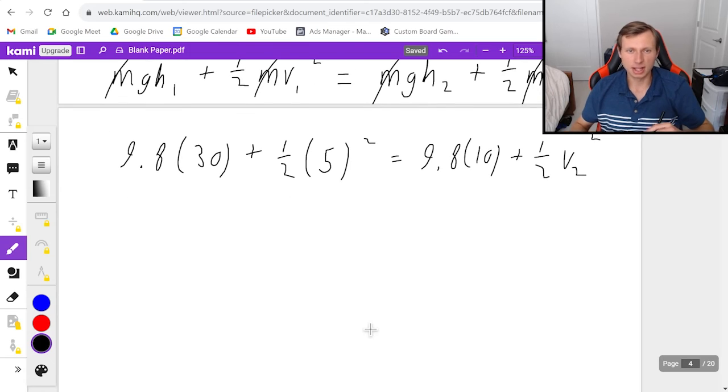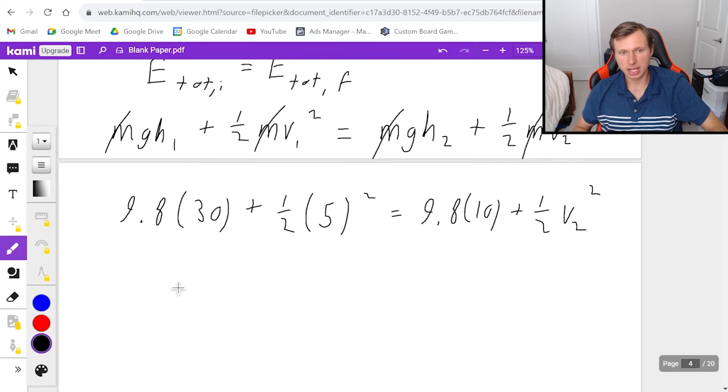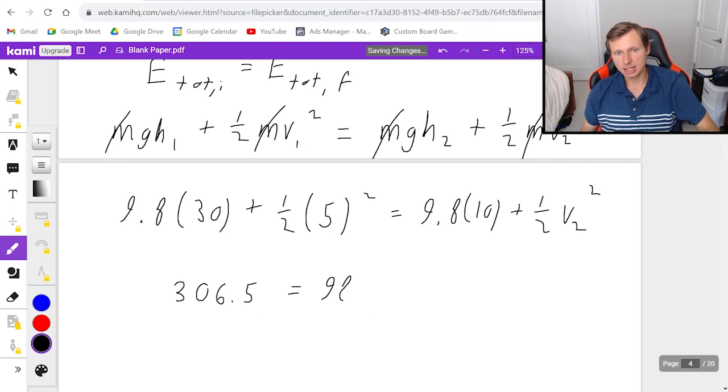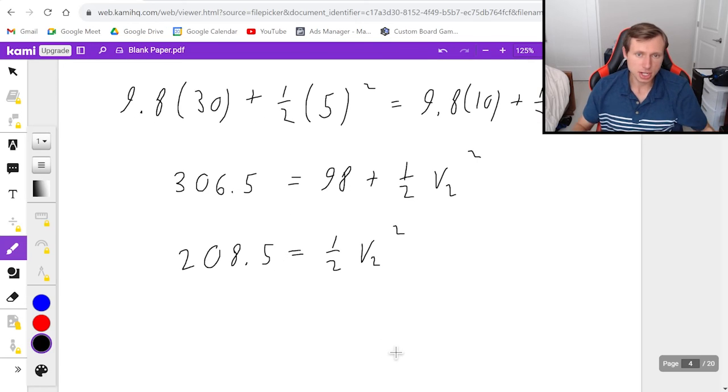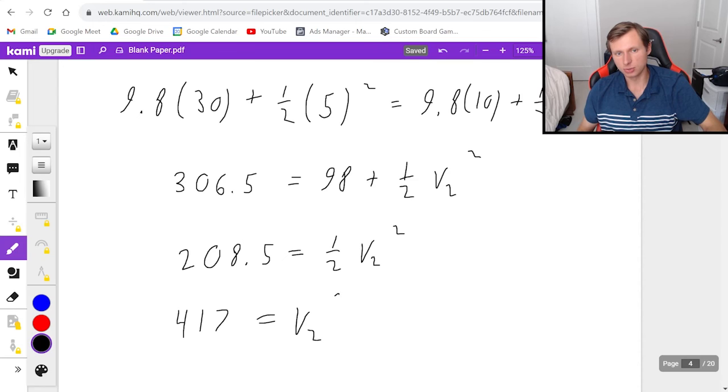I'm going to plug in the left side in my calculator first. So I'm going to get 306.5 for that one, and then on the right side, that's going to be 98 plus 1 half V2 squared. Subtract 98 from both sides, that's going to give me 208.5 equals 1 half V2 squared, and then I just got to multiply both sides by 2. So that's 417 equals V2 squared.